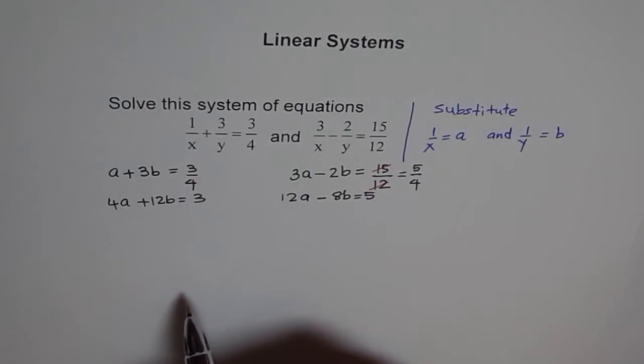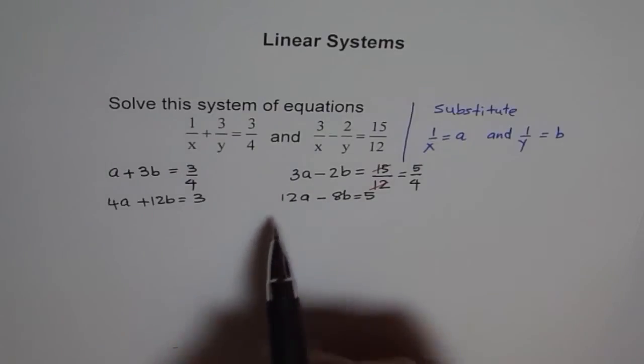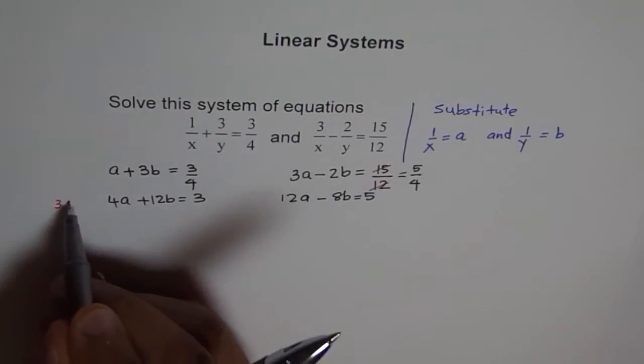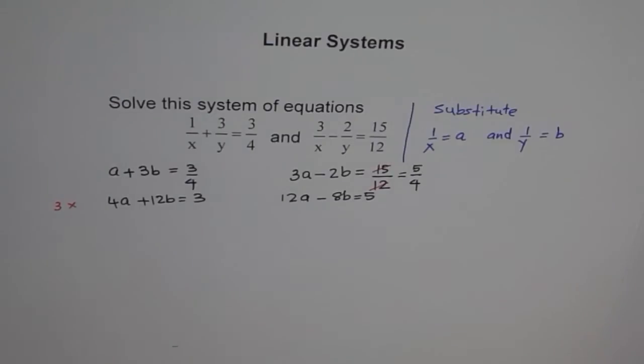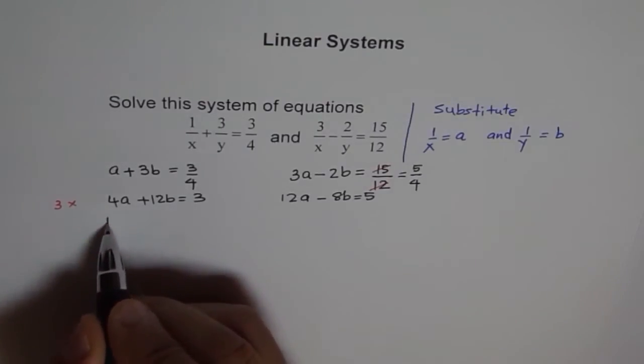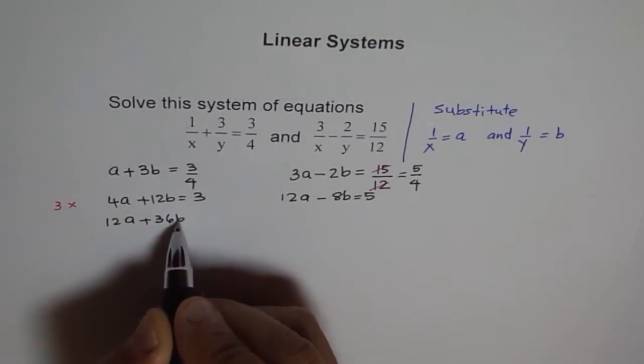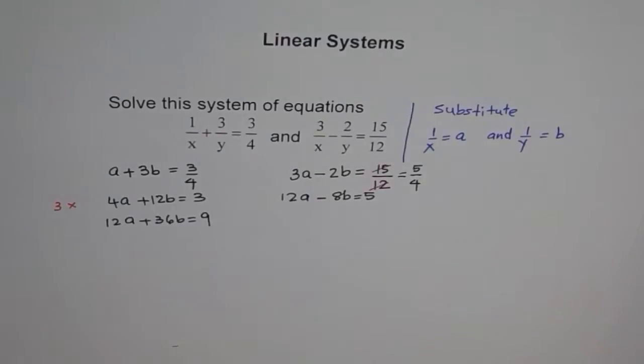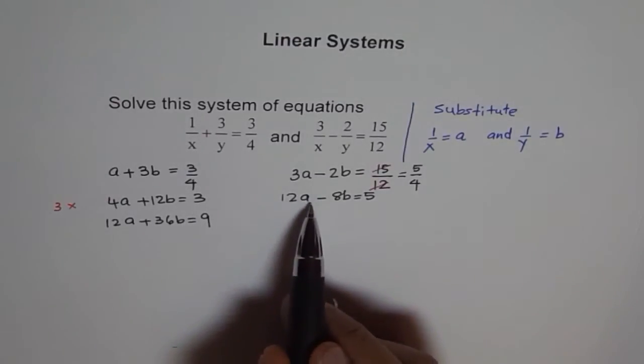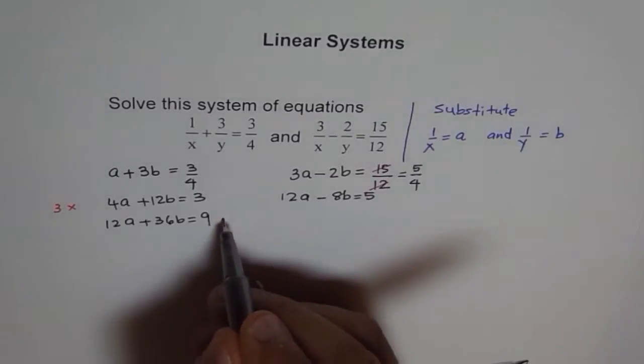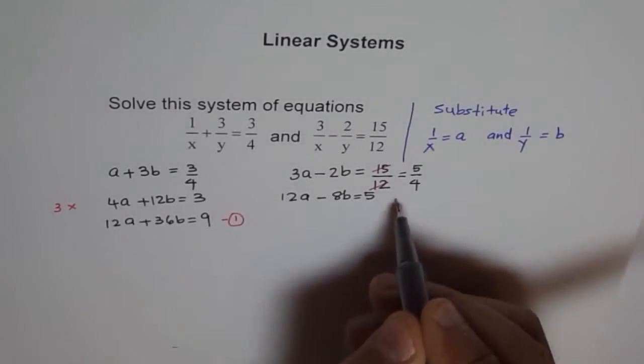Now we can use elimination or substitution. It's easier to make this 12, right? So let's multiply this equation by 3 and see what happens. Then we have 12A plus 3 times 12 is 36B equals 9. Here we have 12A minus 8B equals 5. Let's call this equation 1 and this equation 2.